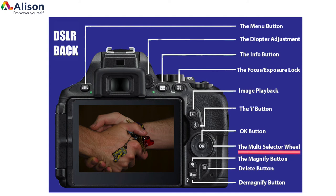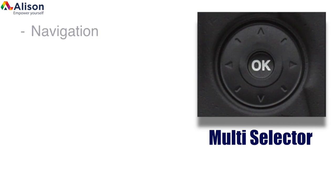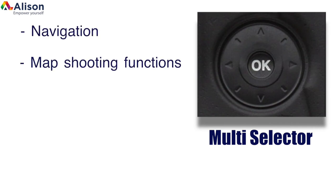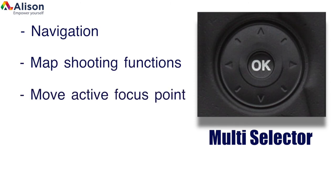The multi-selector wheel is unique in that it's called other names by other manufacturers. It functions as a four-way controller or wheel. It's used most commonly for navigation, but some manufacturers will integrate shooting functions to each direction on the wheel. You can also sometimes use it to shift the active focus point in single point autofocus mode, although this depends on the brand.